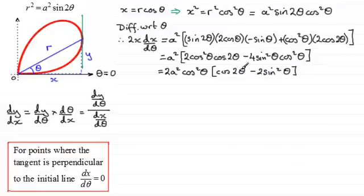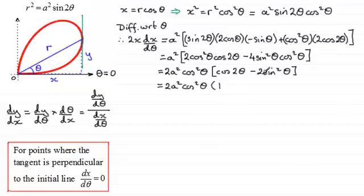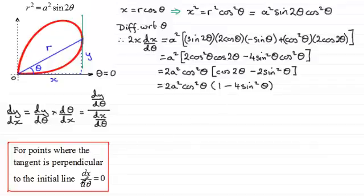Now cos 2 theta equals 1 minus 2 sin squared theta. Substituting that in, inside the bracket we have 1 minus 2 sin squared theta, then minus another 2 sin squared theta, which gives 1 minus 4 sin squared theta. So the fully factored right-hand side is 2a squared cos squared theta times (1 minus 4 sin squared theta). This factored form makes solving for dx/dθ equals zero much easier.